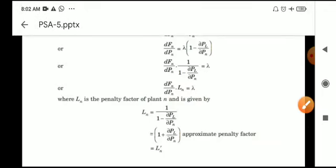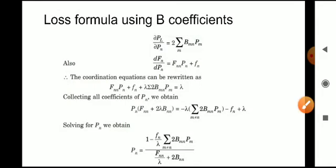The next topic is the loss formula using B coefficients. We know that ∂PL/∂Pn is equal to sigma_M (B_MN into P_M), which is the loss formula we learned in the previous video, where B_MN is the corresponding loss coefficient and P_M corresponds to the source loadings.